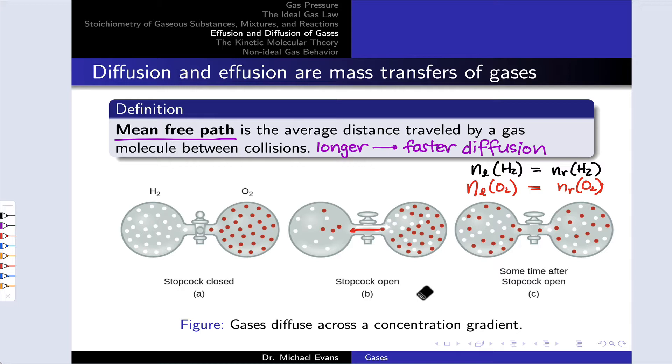So mean-free path gives us a sense of the speed of diffusion of the gas. It can be related to the kinetic energy and the speeds of the particles themselves, and it's an important variable for beginning to visualize the submicroscopic model of gases. And it's an interesting one to explore in a quantitative sense.